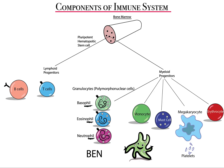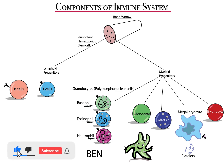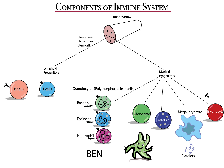Moving on, myeloid progenitors can generate into monocytes and mature into macrophages, which are very important in innate immunity. Myeloid progenitors also turn into mast cells and megakaryocytes; the megakaryocytes break down into platelets. Myeloid progenitors additionally give rise to erythroblasts that turn into erythrocytes. So, except for T cells and B cells, all other immune cells are myeloid cells.